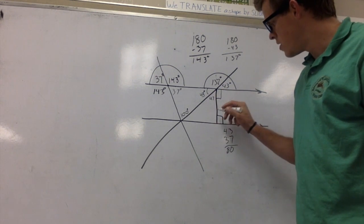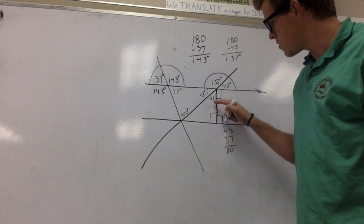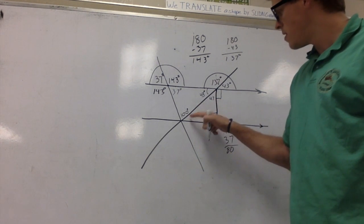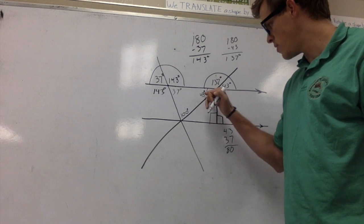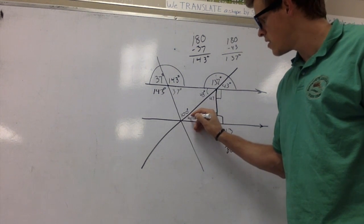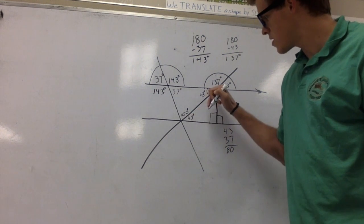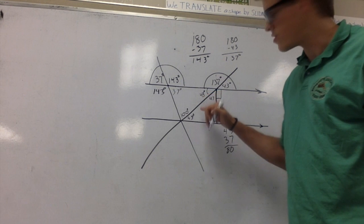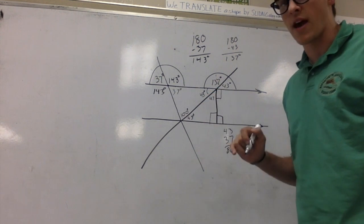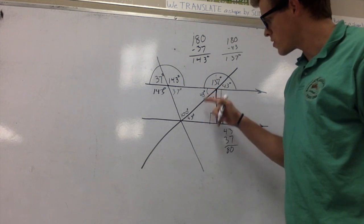We know that this is 90, so 47 plus 90 equals 180, we know that's going to be 43. And we also know this right here shares a relationship of alternate interior angles, so we know that those are congruent.